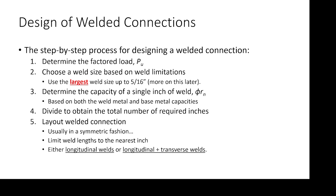Let's talk about designing a welded connection. To relate it to what we did with bolted connections: with bolted connections, we determined the factored load, determined the capacity of a single bolt — either under bolt shear or bolt slip — then divided to get the number of bolts. With welded connections, it's actually a lot more straightforward. We determine the capacity of a single inch of weld — say, 5.27 kips per inch — then divide the total load by that to get the total number of inches of weld required, and then lay it out.